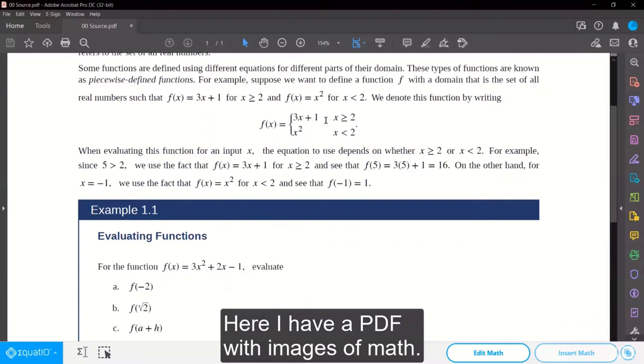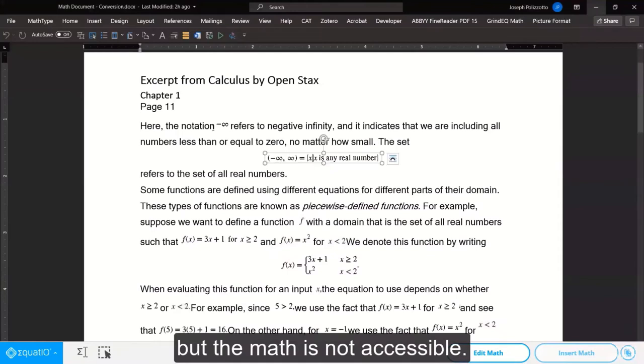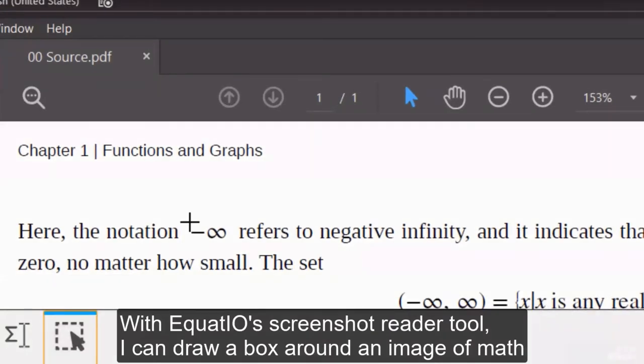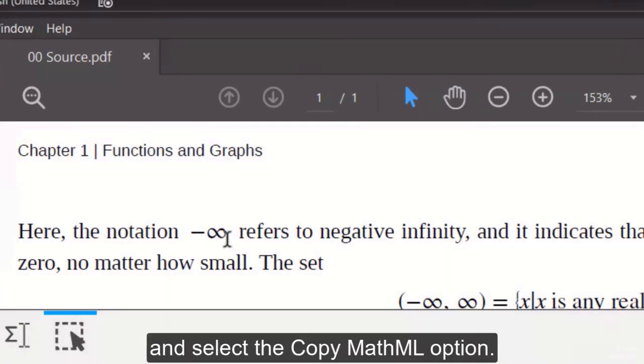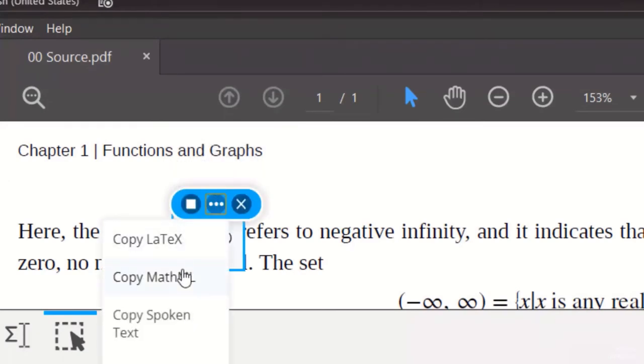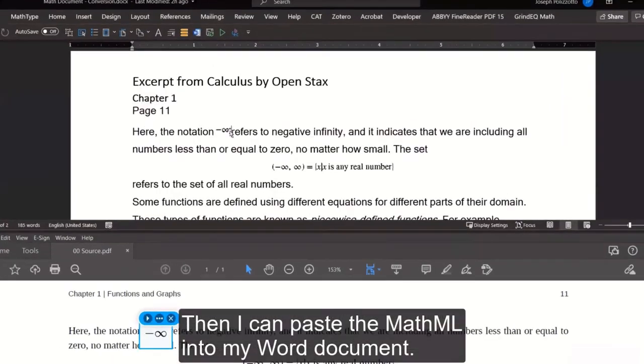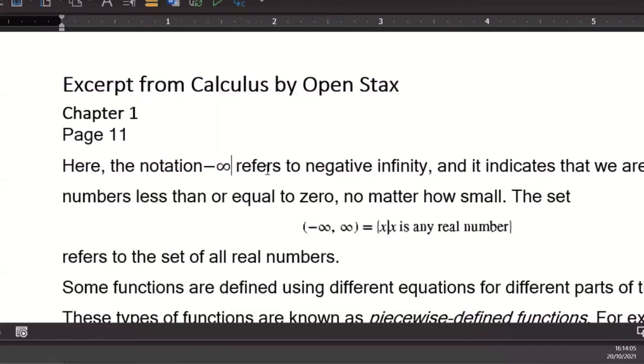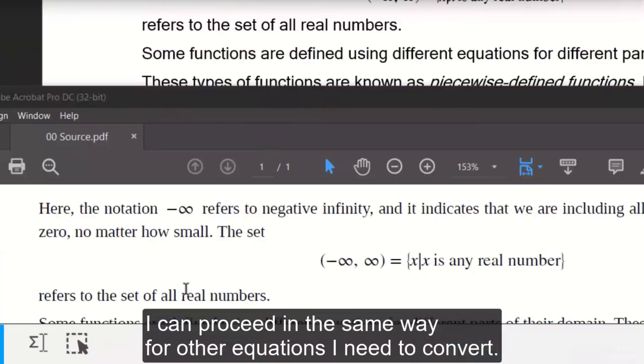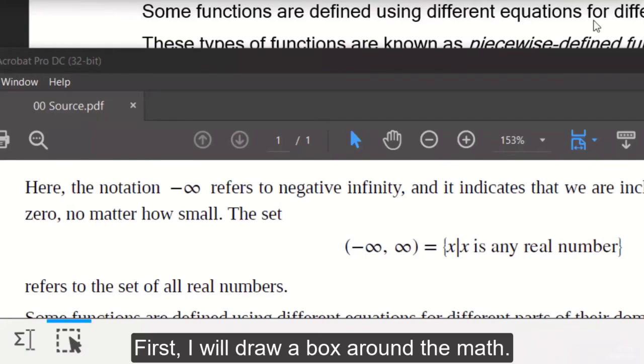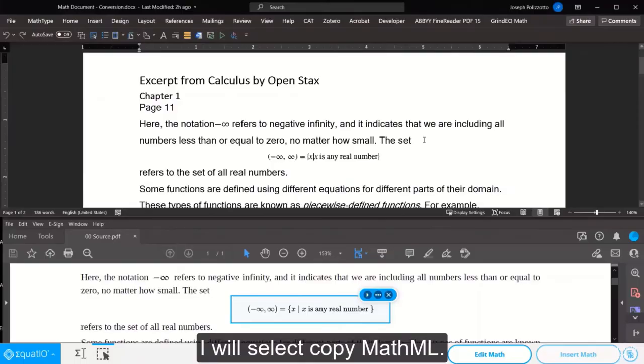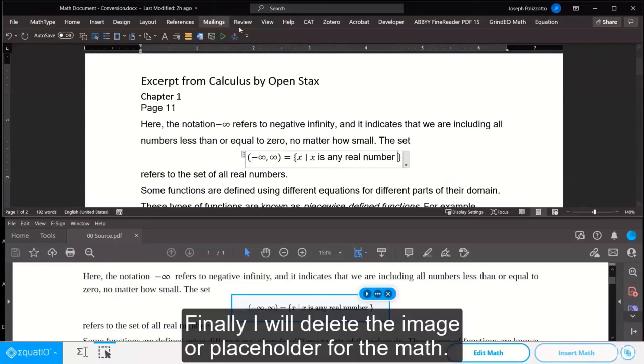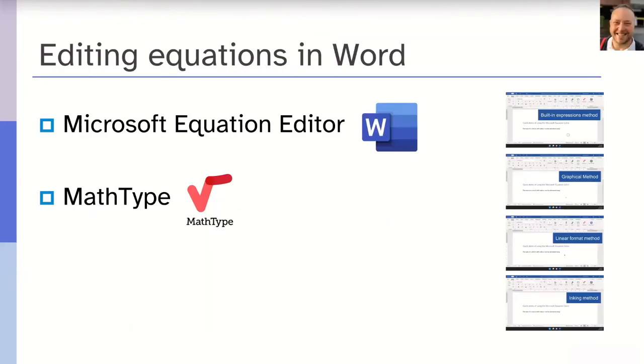Here I have a PDF with images of math. I have extracted the text to a Word document, but the math is not accessible. I have images of math as a placeholder for easier editing. With EquatIO's Screenshot Reader Tool, I can draw a box around an image of math and select the Copy MathML option. Then I can paste the MathML into my Word document. I now have an Office Math equation, so I can delete the image of the math. I can proceed in the same way for the other equations I need to convert.